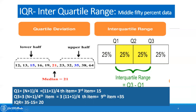To understand it better, I have taken another example with a number series already arranged in ascending order. There are 11 observations. Q1 equals (N+1)/4th item; N is 11, so (11+1)/4 gives the 3rd item, which is 15. Similarly, Q3 equals 3×(N+1)/4th item, so 3×(11+1)/4 gives the 9th item, which is 35. Therefore, IQR or interquartile range equals 35 minus 15, which is 20.